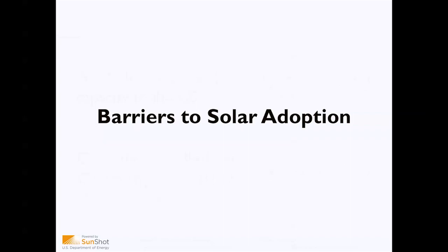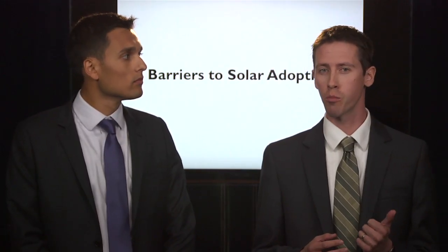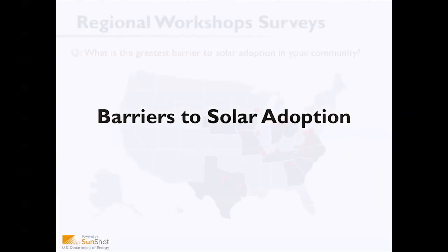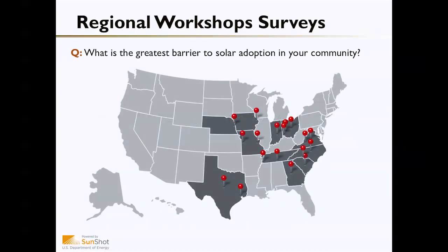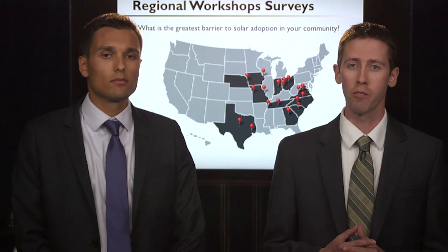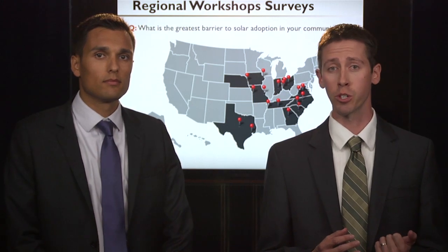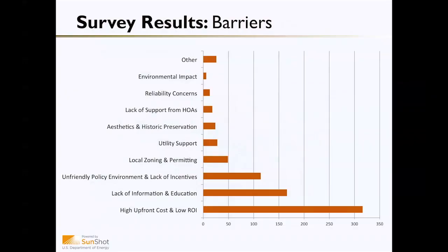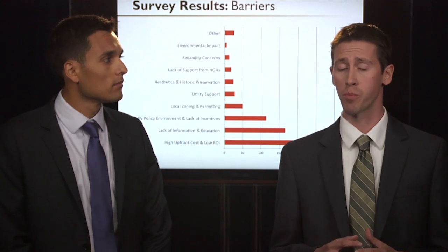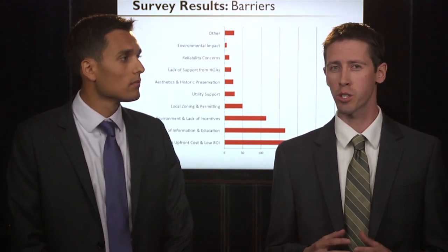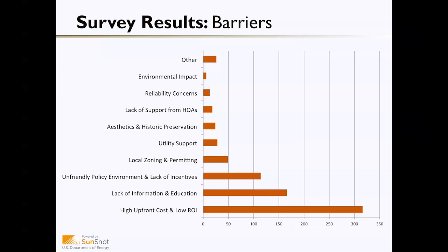Given the tremendous value and opportunity in solar, there are still a number of barriers to adopting it in your community. Over the last year we presented over 23 workshops to more than 750 local government officials and asked them: what's the greatest barrier to solar adoption in your community? Number one was cost. Number two was lack of education or awareness around the opportunity. Other barriers included financing, utility support, and homeowners associations. But by far the greatest identified barrier was cost — or at least the perception of cost and the return on investment that solar could provide.